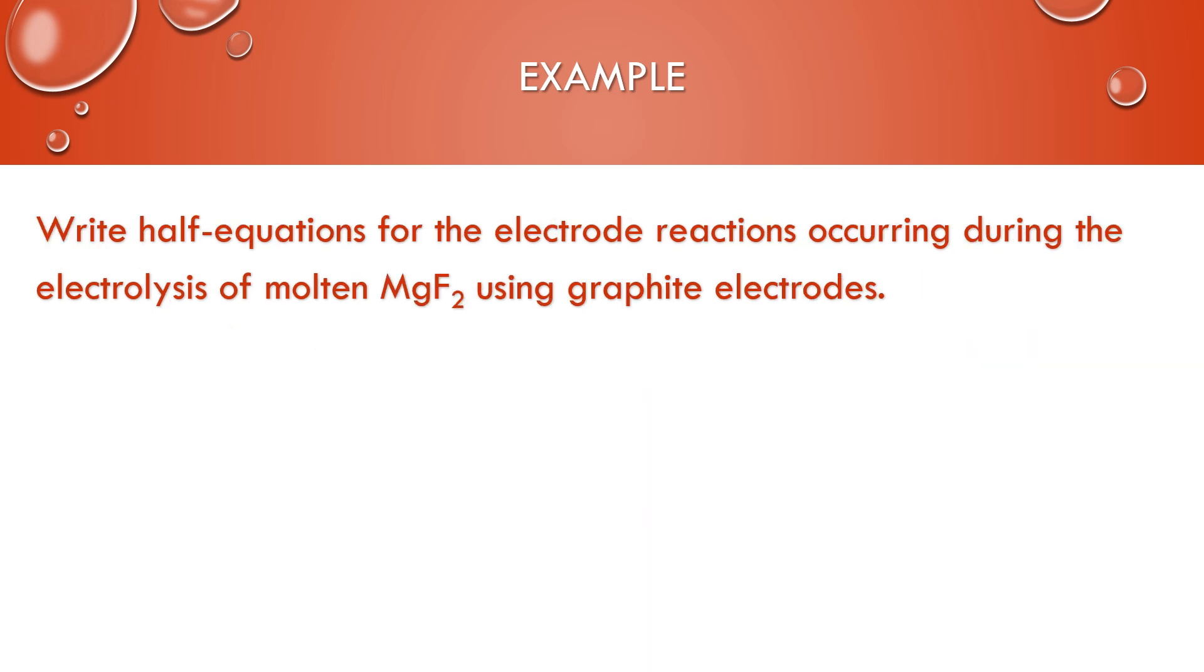So this one wants us to write half equations for the electrode reactions occurring during the electrolysis of molten magnesium fluoride using graphite electrodes. Remember, these are inert. So our magnesium ions are going to be reduced, gain electrons, and form solid magnesium. They are reduced at the cathode, which is the negative electrode for electrolysis. The two fluoride ions are going to be oxidized and you will form fluorine gas and the two electrons. And this occurs at the anode, which is the positive electrode for electrolysis.